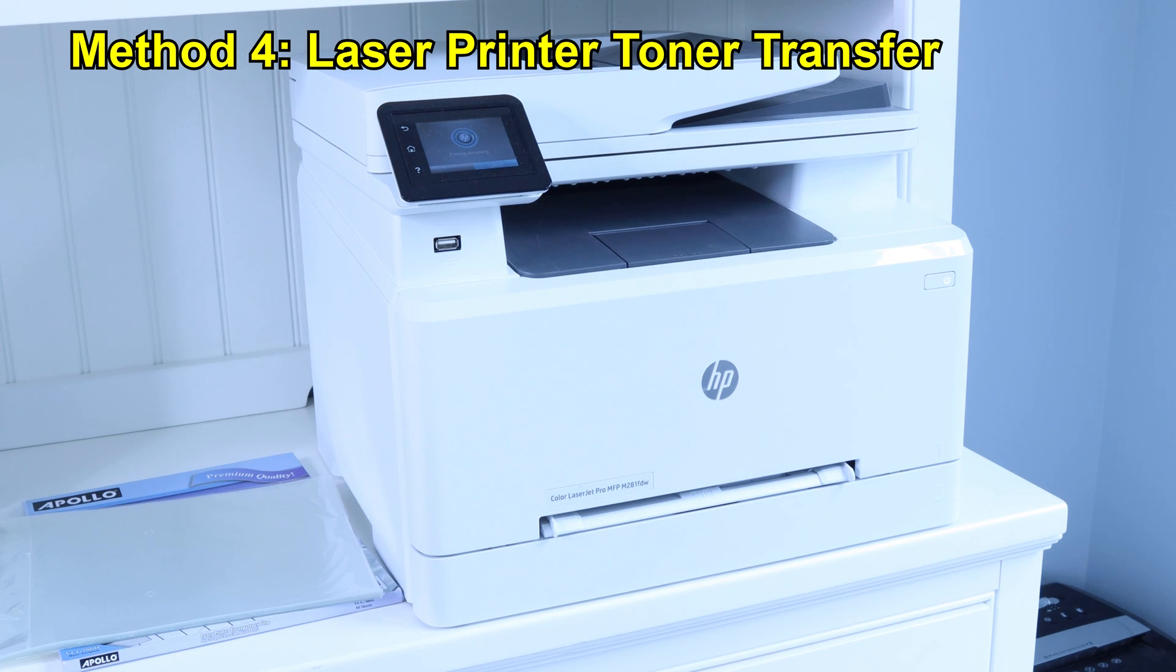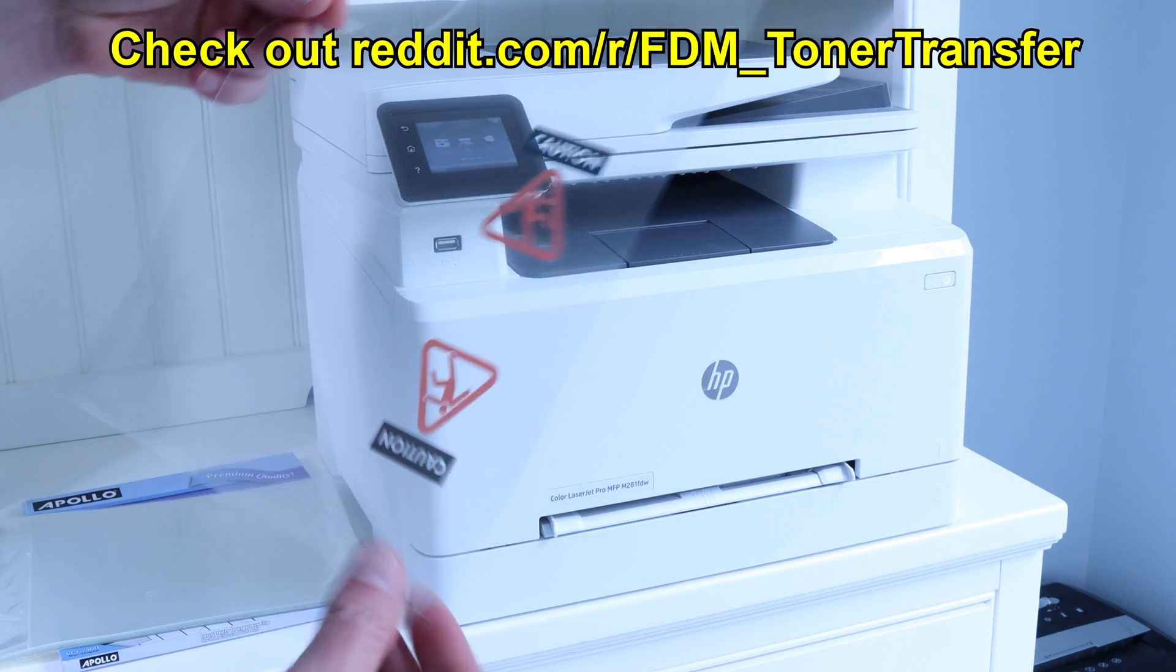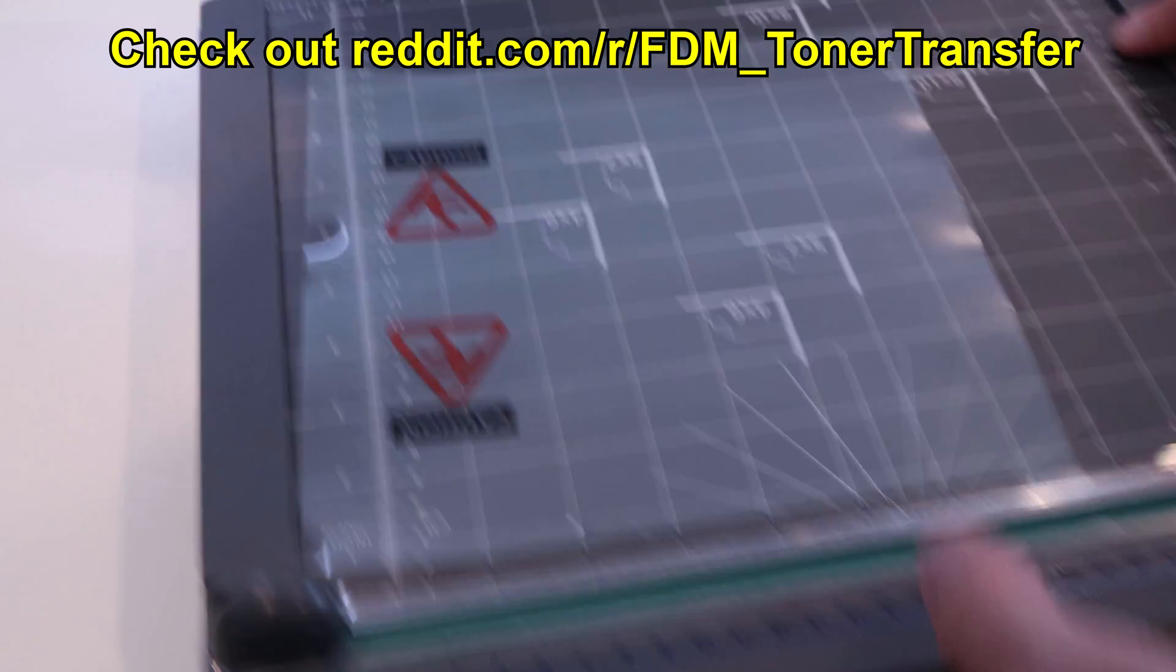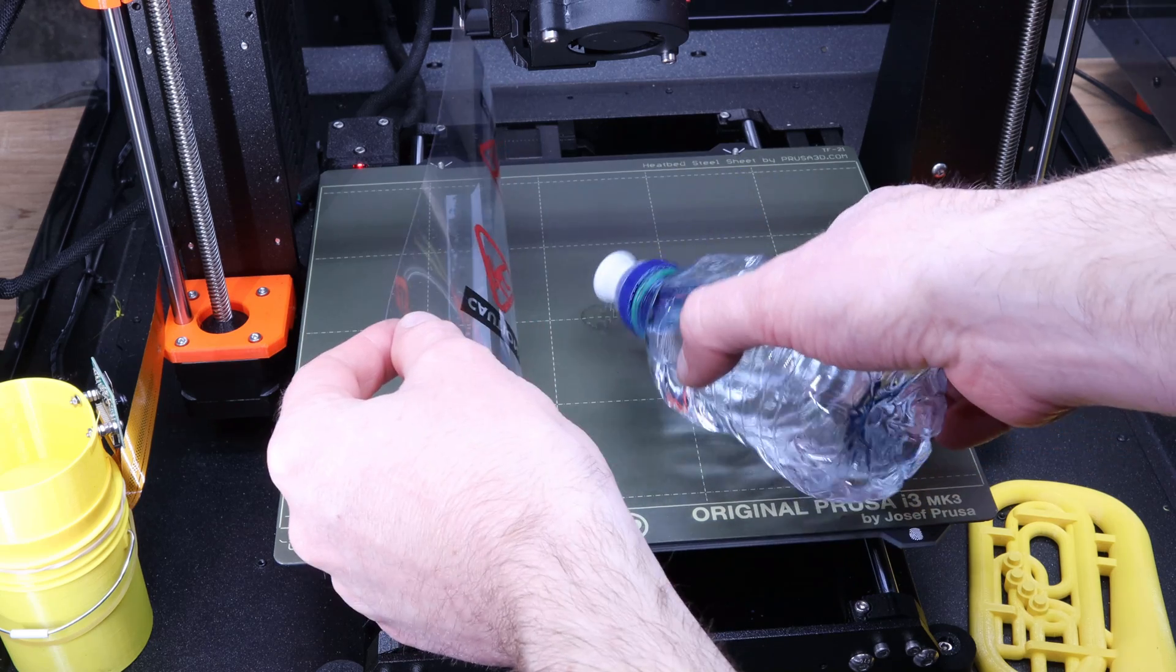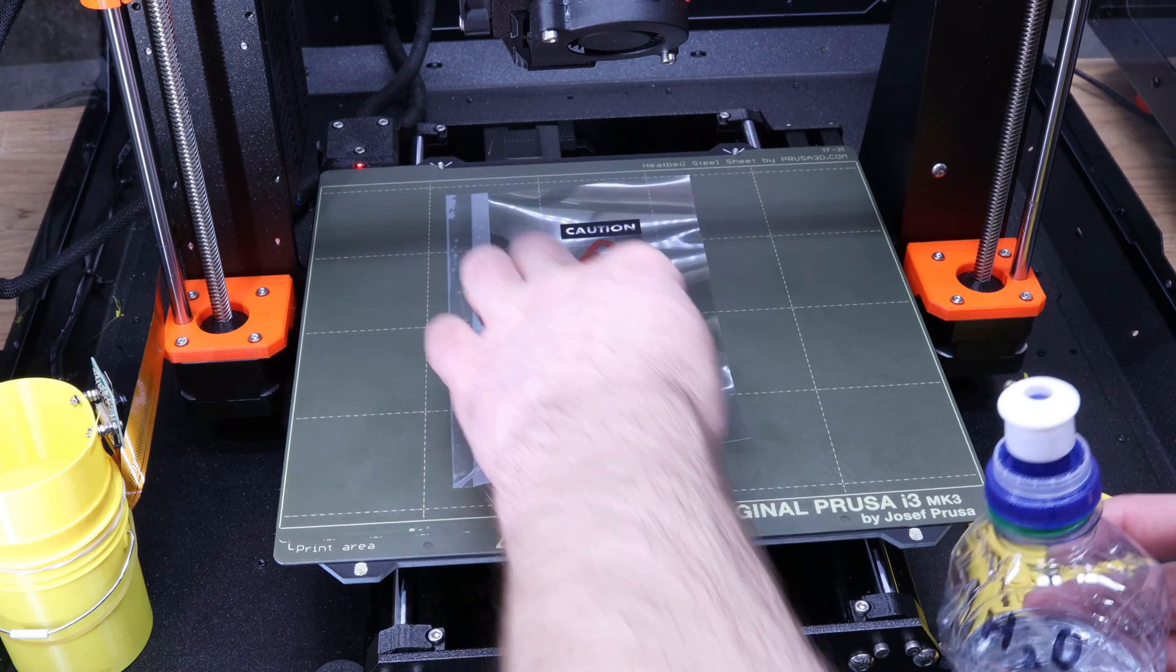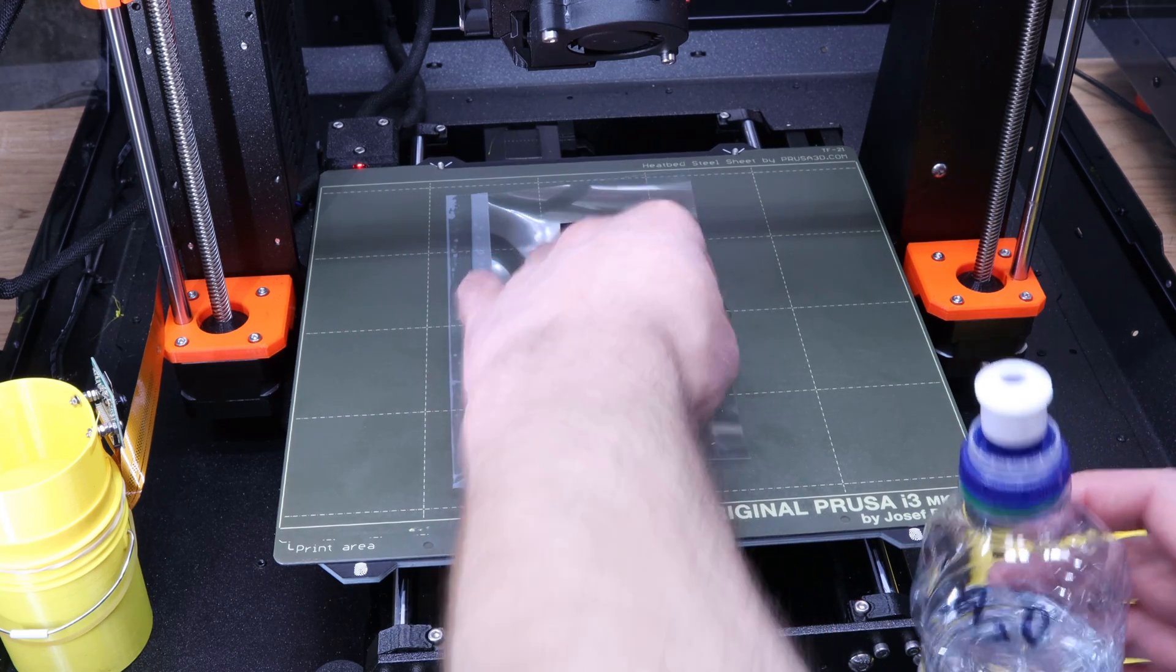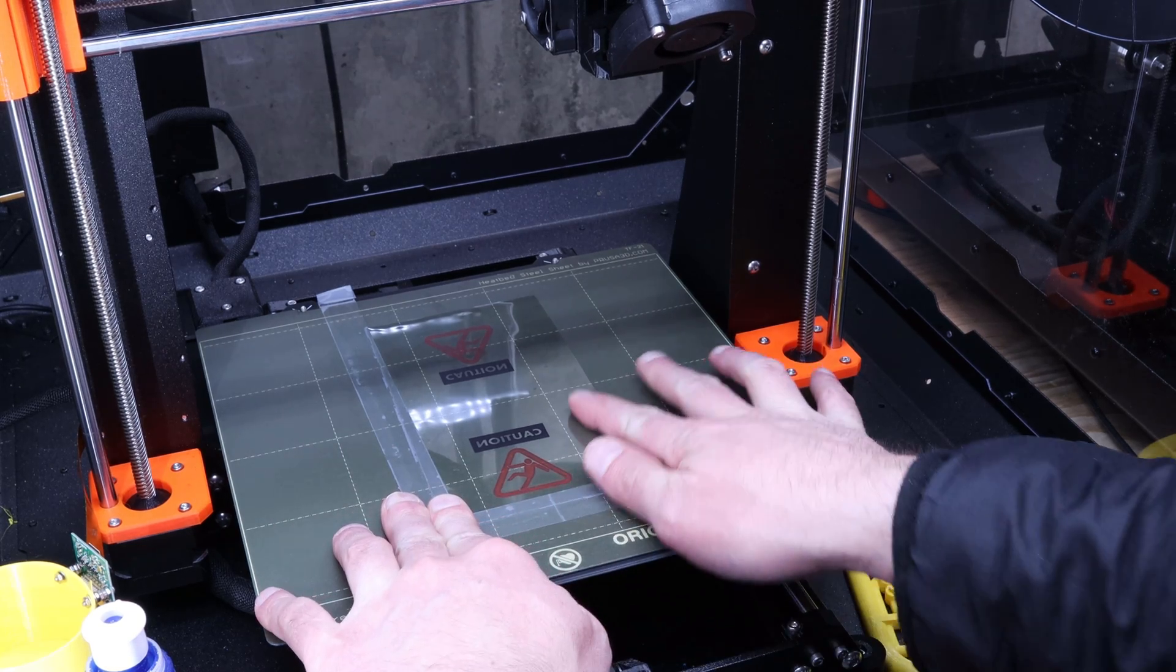For the final method I tried using toner transfer for the first time. You will need a laser printer for this. Most household printers are inkjets and won't work for toner transfer. The process is a little complex. First I printed out the image on transparency paper and you have to print out a mirrored version of the image.